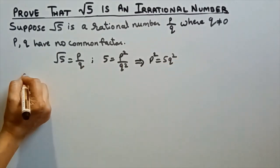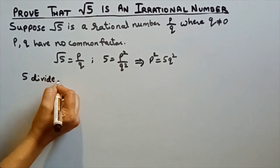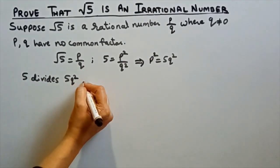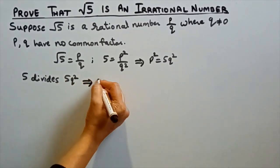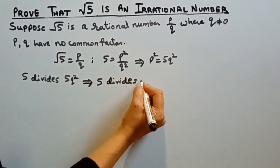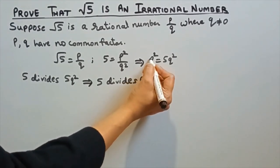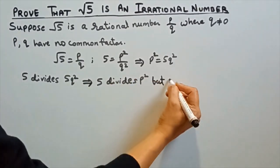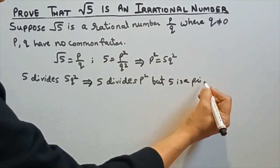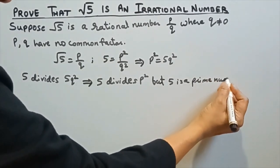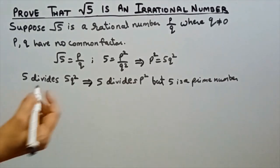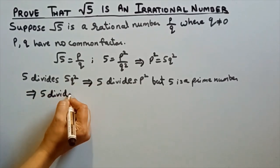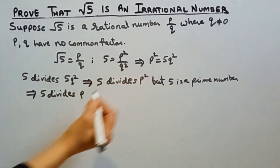This implies p squared is equal to 5q squared. It means 5 divides 5q squared — 5 is a factor — this implies that 5 divides p squared, because of the equality sign. 5 divides p squared. But we know that 5 is a prime number.